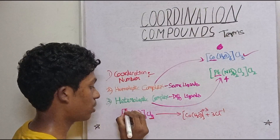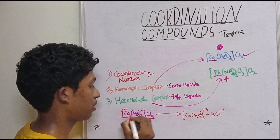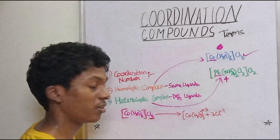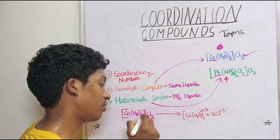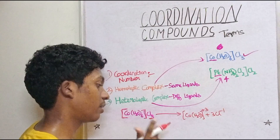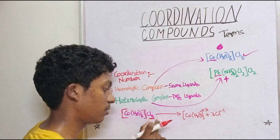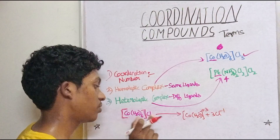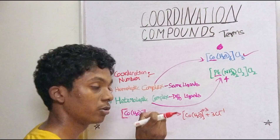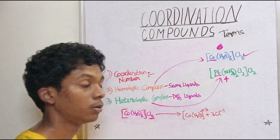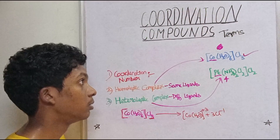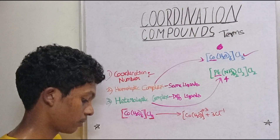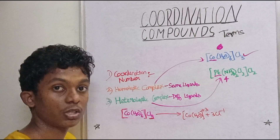There is a square bracket — this is the coordination sphere. Outside it is called the ionization sphere. Put the coordination sphere and ionization sphere separate. That's all. Very easy concept. Thank you for watching. Bye.